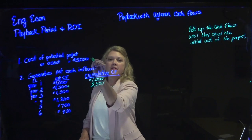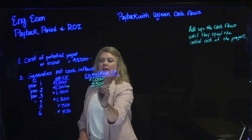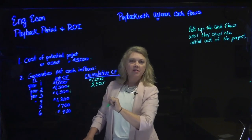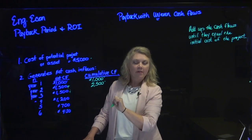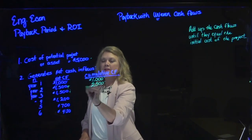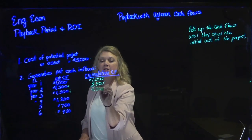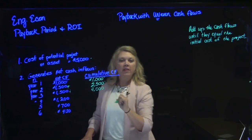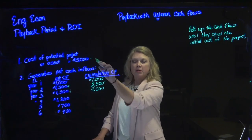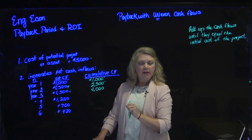Are we up to our $5,000 cost yet? Nope. In year three, we get an additional $1,500 net in from this project, so we're up to $2,500 plus $1,500 — we're up to $4,000 net cash in by the end of year three. Are we at our $5,000? Not quite yet, but getting close.